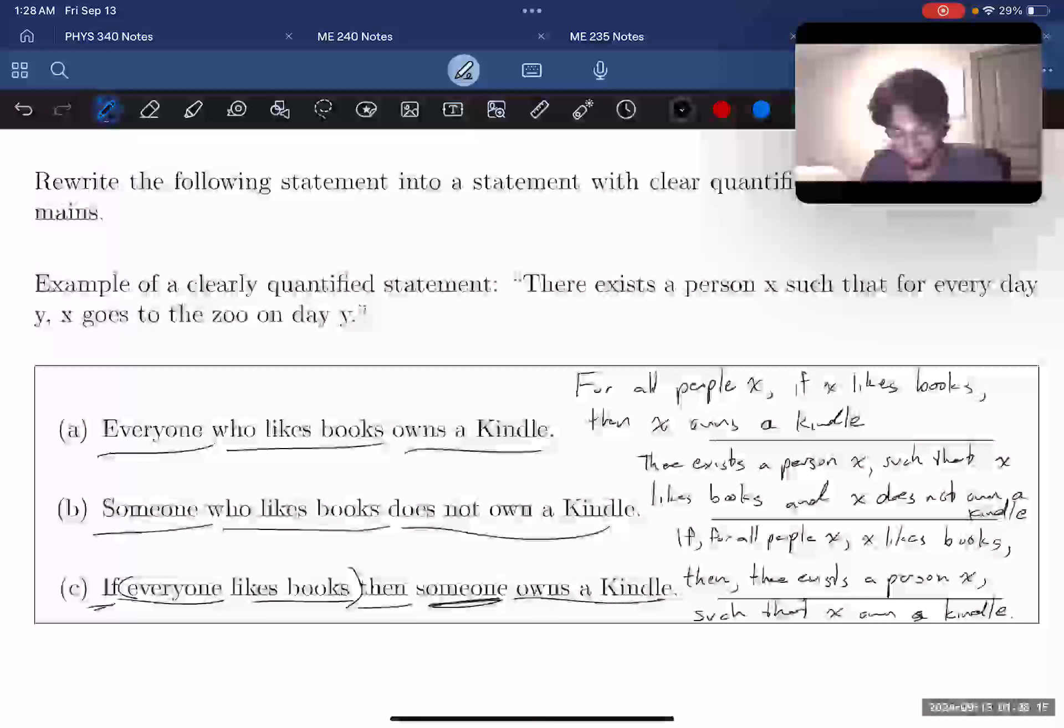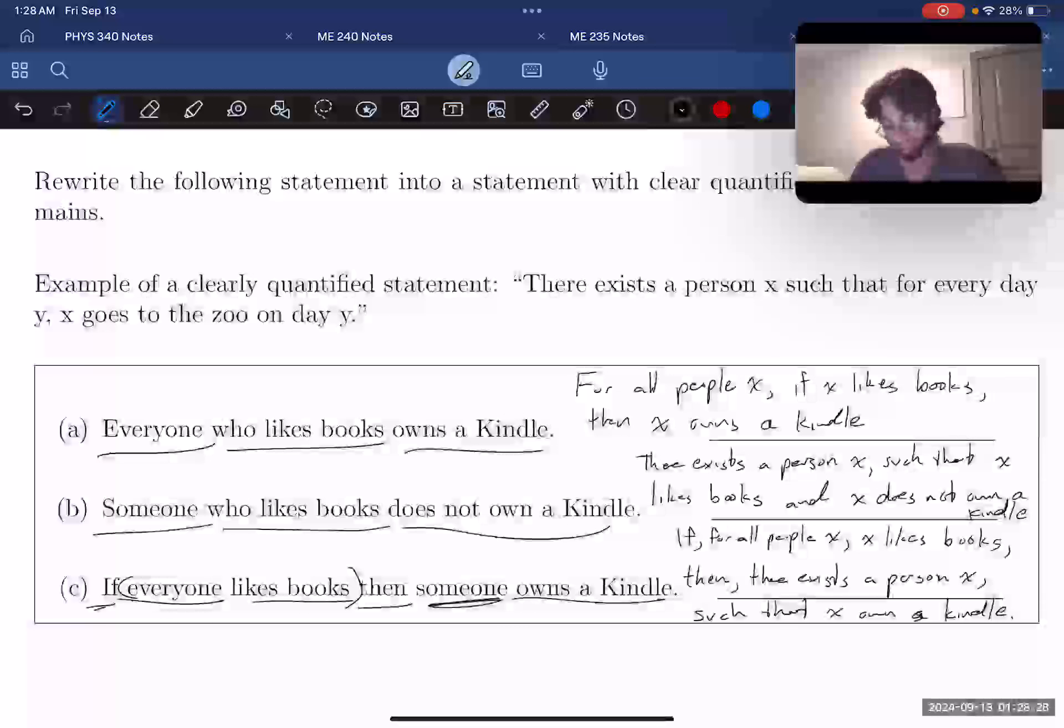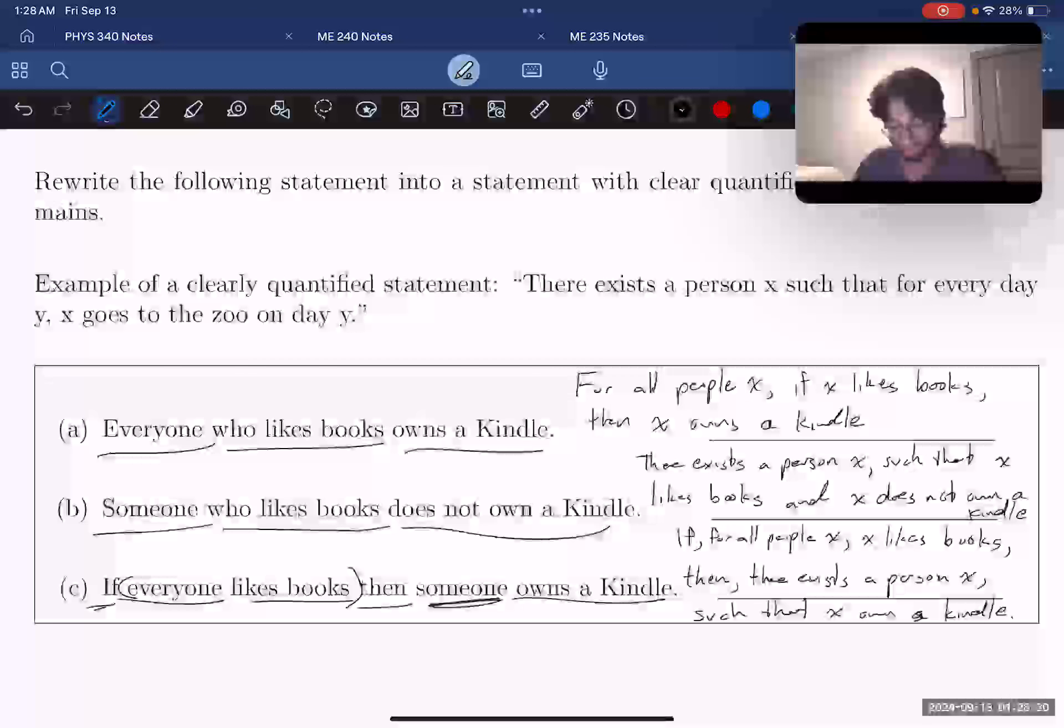So for A, B, and C, we have A being for all people X, if X likes books, then X owns a Kindle. Part B is there exists a person X such that X likes books and X does not own a Kindle. And then for C, we're saying that if for all people X, X likes books, then there exists a person X such that X owns a Kindle.